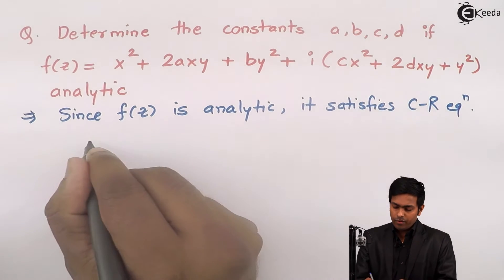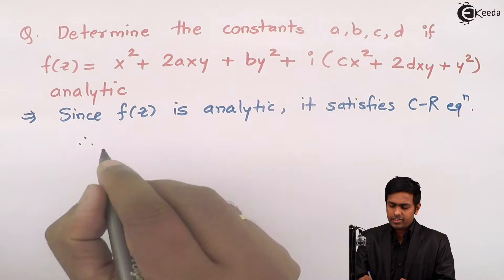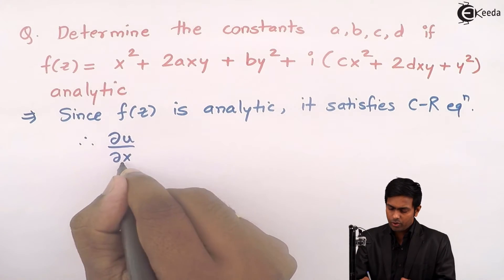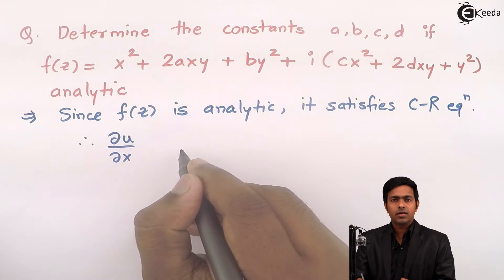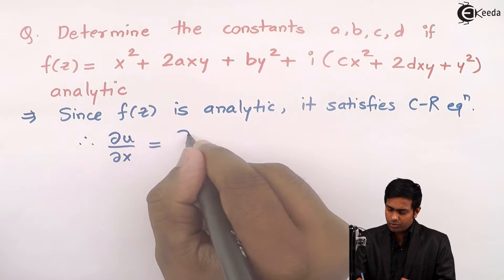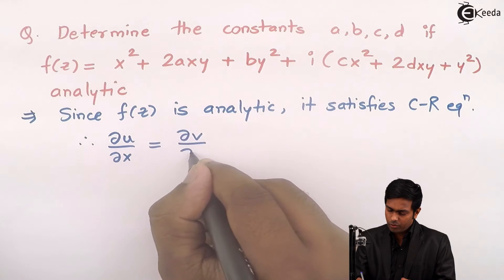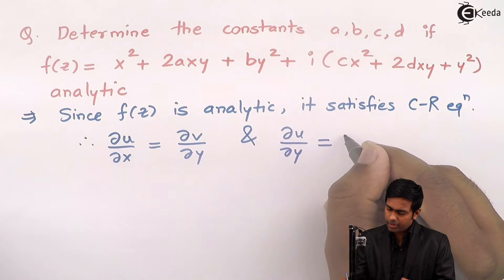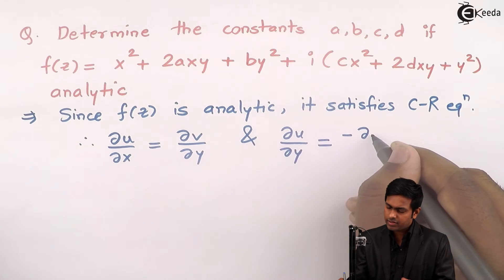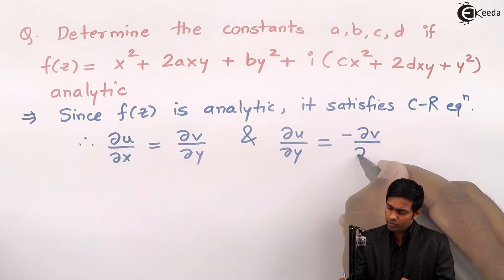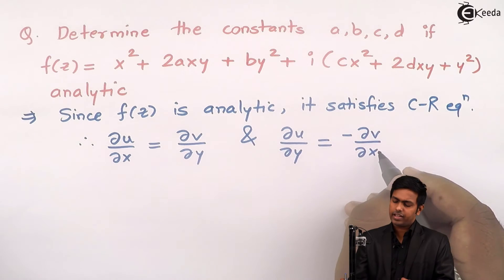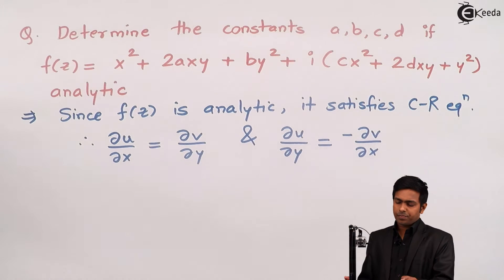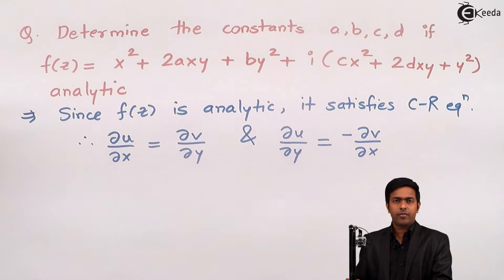The Cauchy-Riemann equations are: ∂u/∂x is equal to ∂v/∂y, and ∂u/∂y is equal to minus ∂v/∂x. This is the Cauchy-Riemann equation.